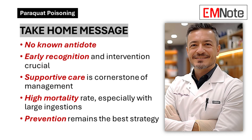Take-home message. In the absence of a specific antidote, management of paraquat poisoning remains primarily supportive. Early recognition and rapid intervention are crucial to optimizing outcomes. The cornerstone of care remains supportive management, with careful attention to avoiding iatrogenic complications such as oxygen toxicity. Given the high mortality rate, particularly in cases of significant ingestion, prevention remains the optimal strategy for reducing the burden of paraquat poisoning in clinical practice.